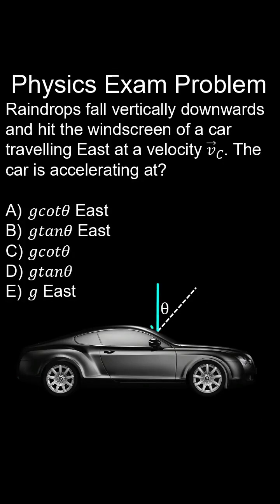Raindrops fall vertically downwards and hit the windscreen of the car. And the car is travelling east at a velocity vc.